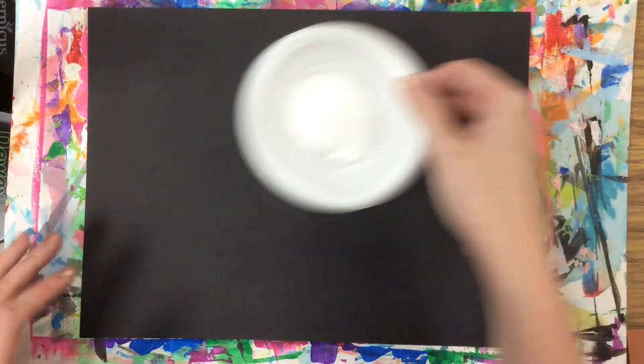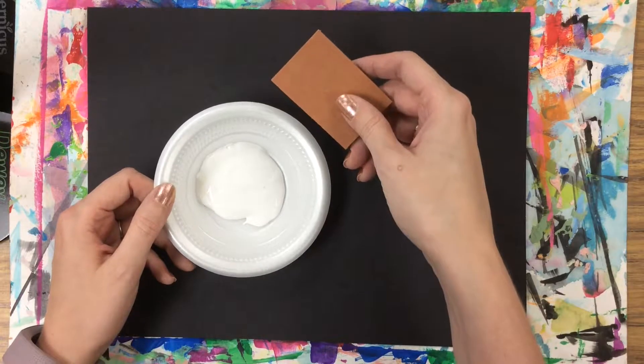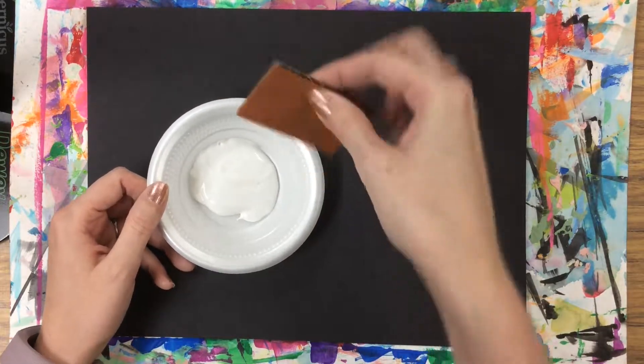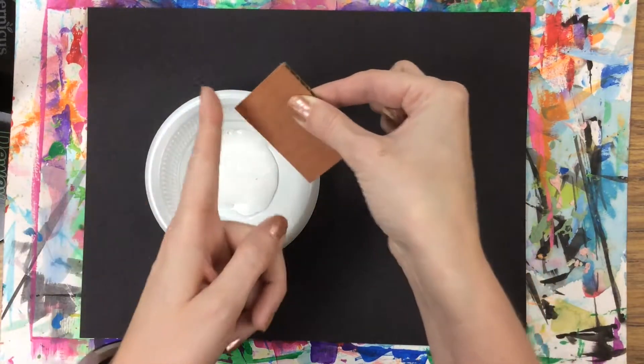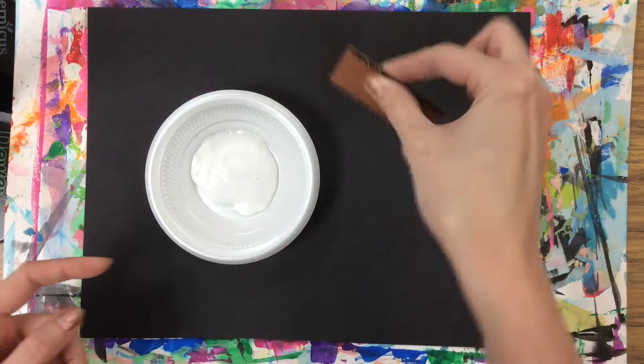All right, next, I have a little bowl of white tempera paint. I'm also going to take my little rectangle piece of cardboard, and I'm going to hold it at the top so that I can put this part in the paint and make my printed lines.